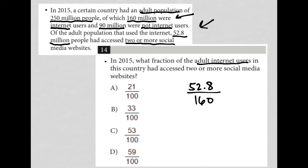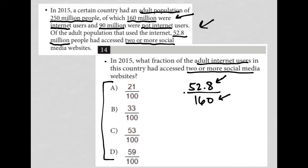I do not see this fraction specifically in any of my answer choices. On this test, whenever that happens, first I make sure that I found the correct numbers. I know for sure that 52.8 million goes along with the two or more social media websites, and I know for sure that 160 million is the adult Internet users. So I'm very confident about my numbers. Whenever I see this mismatch, I know my fraction is correct but it's not listed directly in the answer choices, so I just find the equivalent decimal form of this fraction.